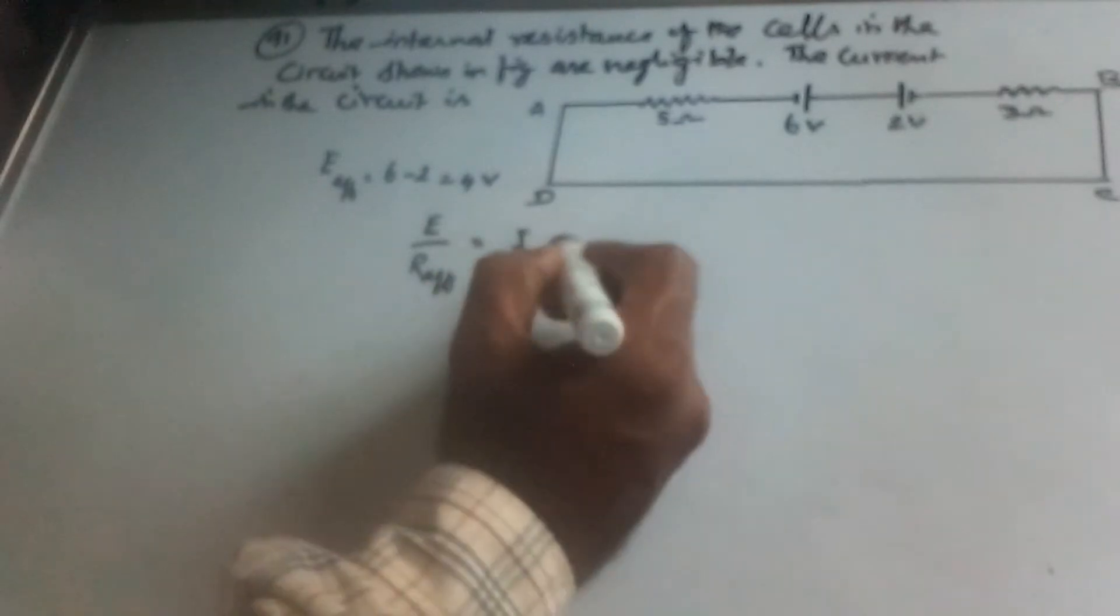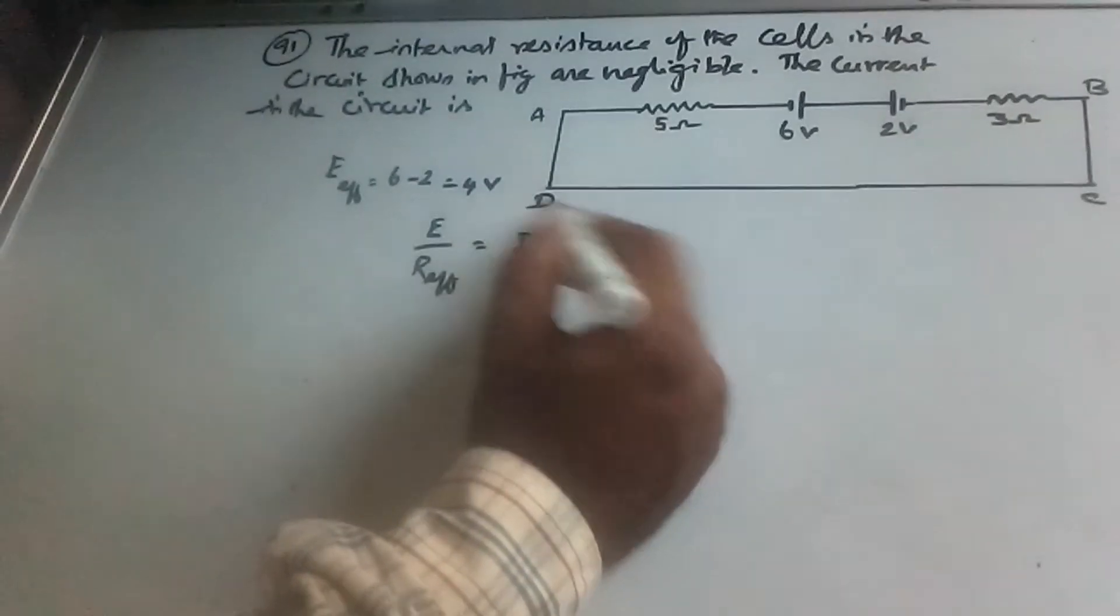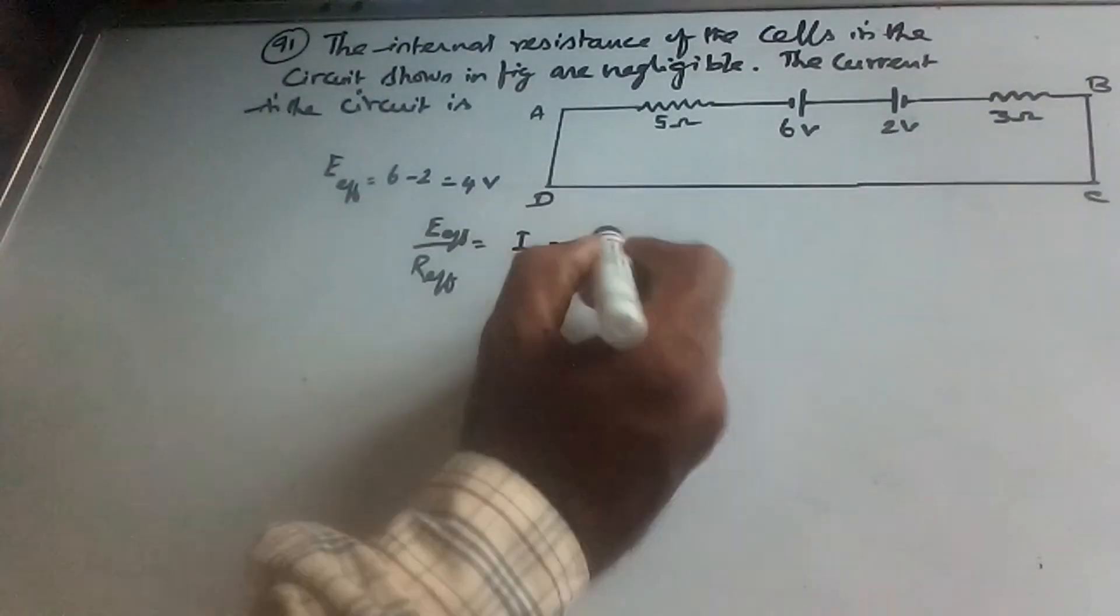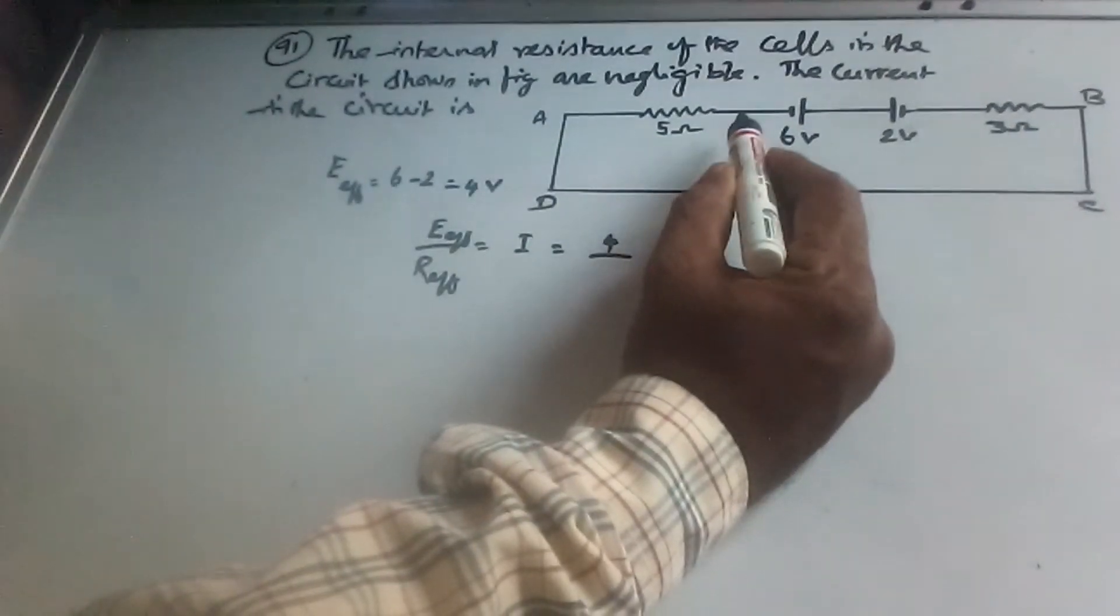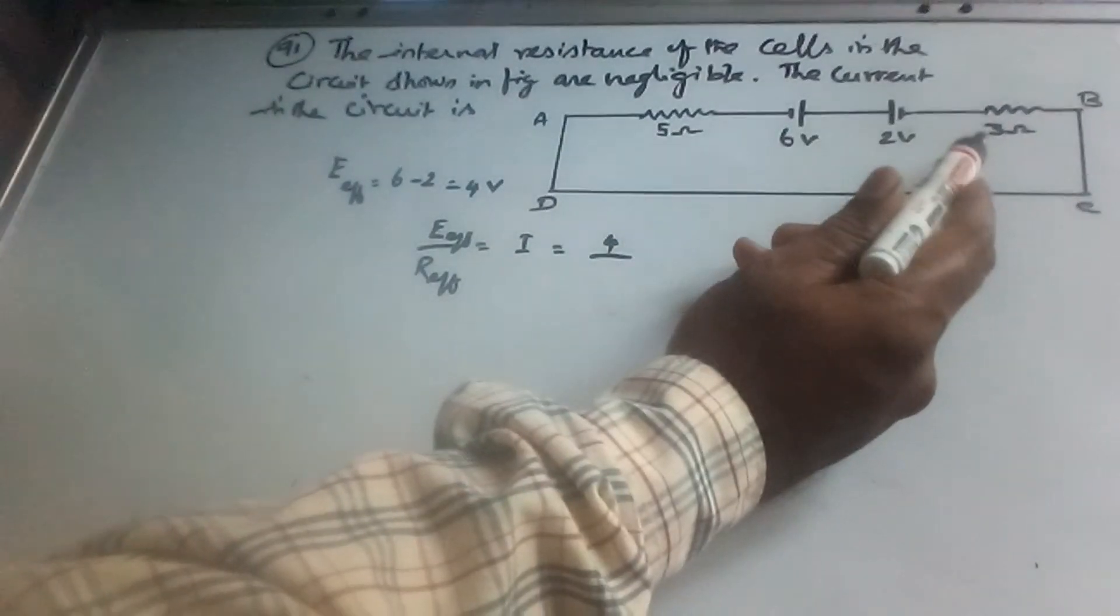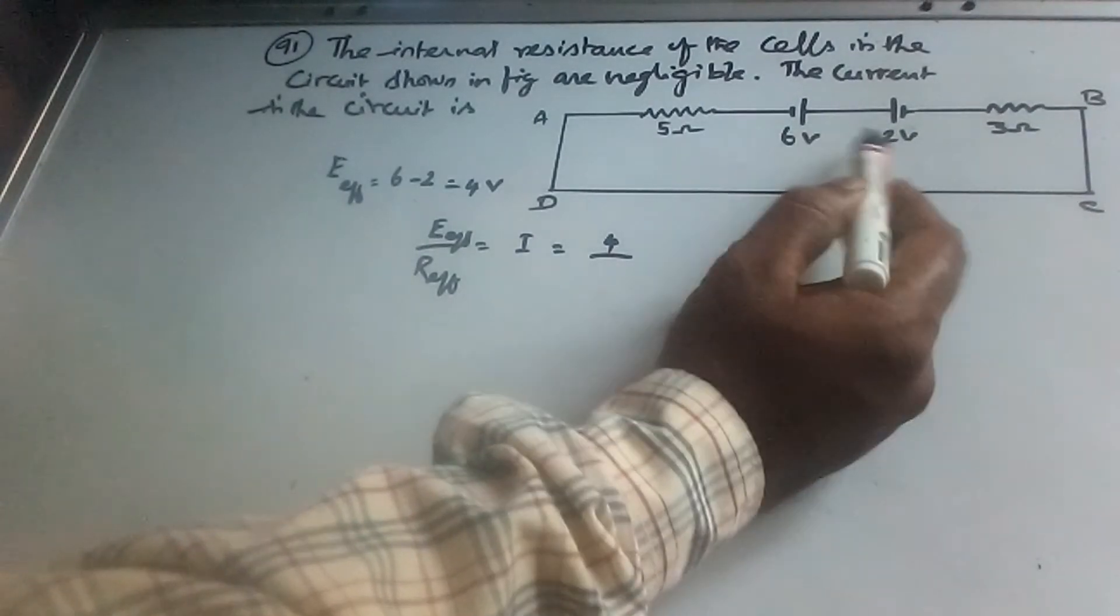That is, the current is equal to the net EMF divided by resistance. The net EMF is 4V. We have 5 ohm and 3 ohm resistances in the circuit.